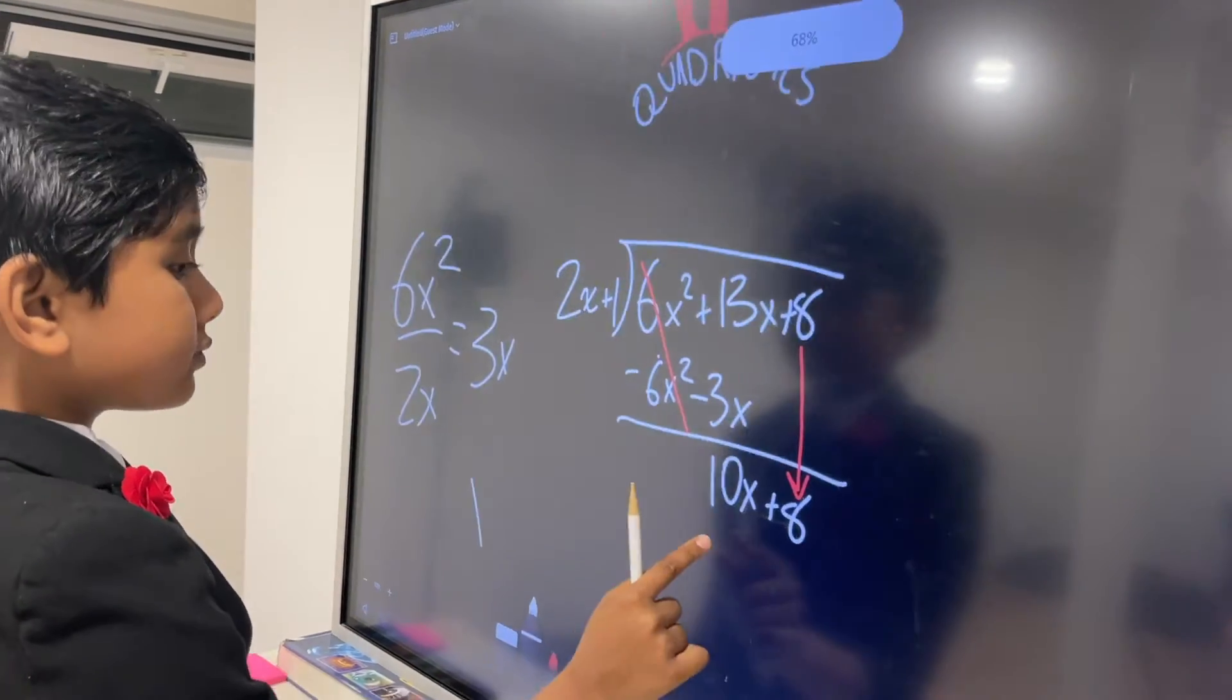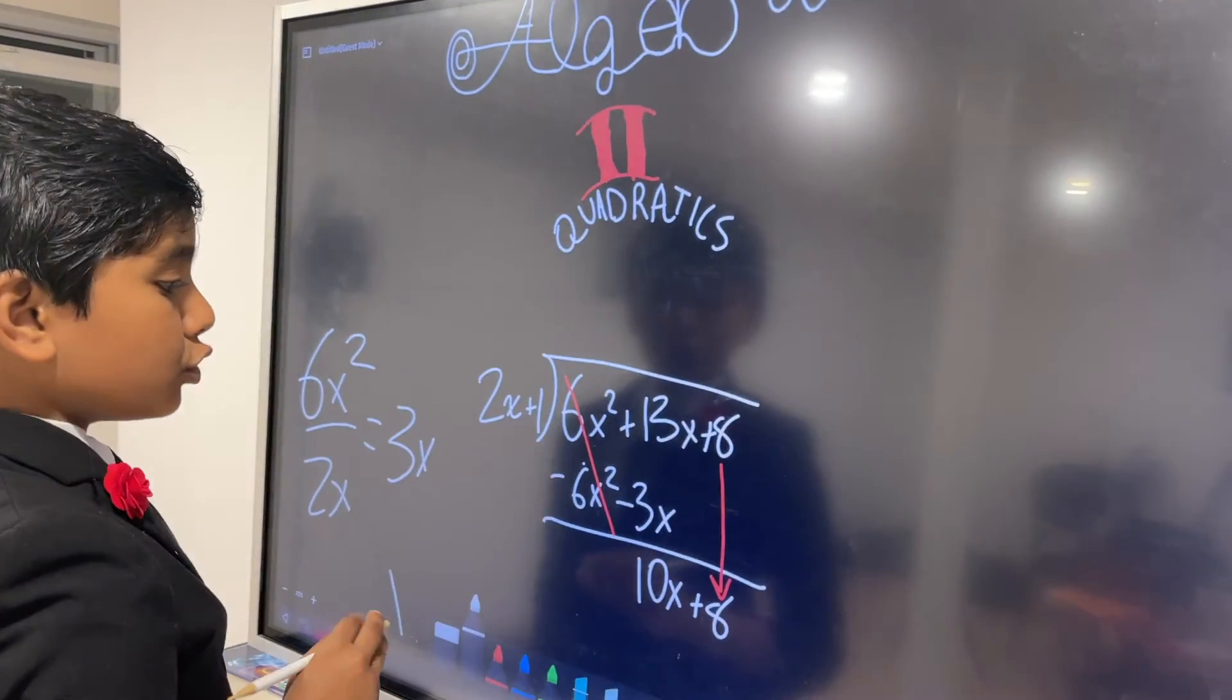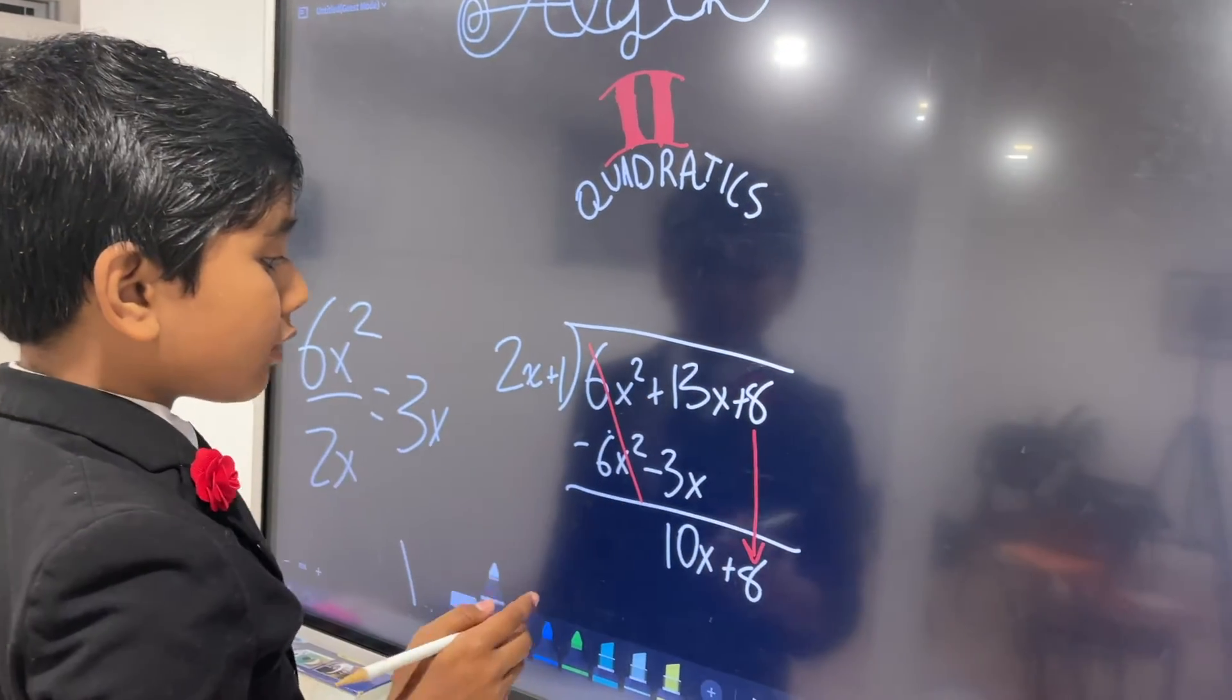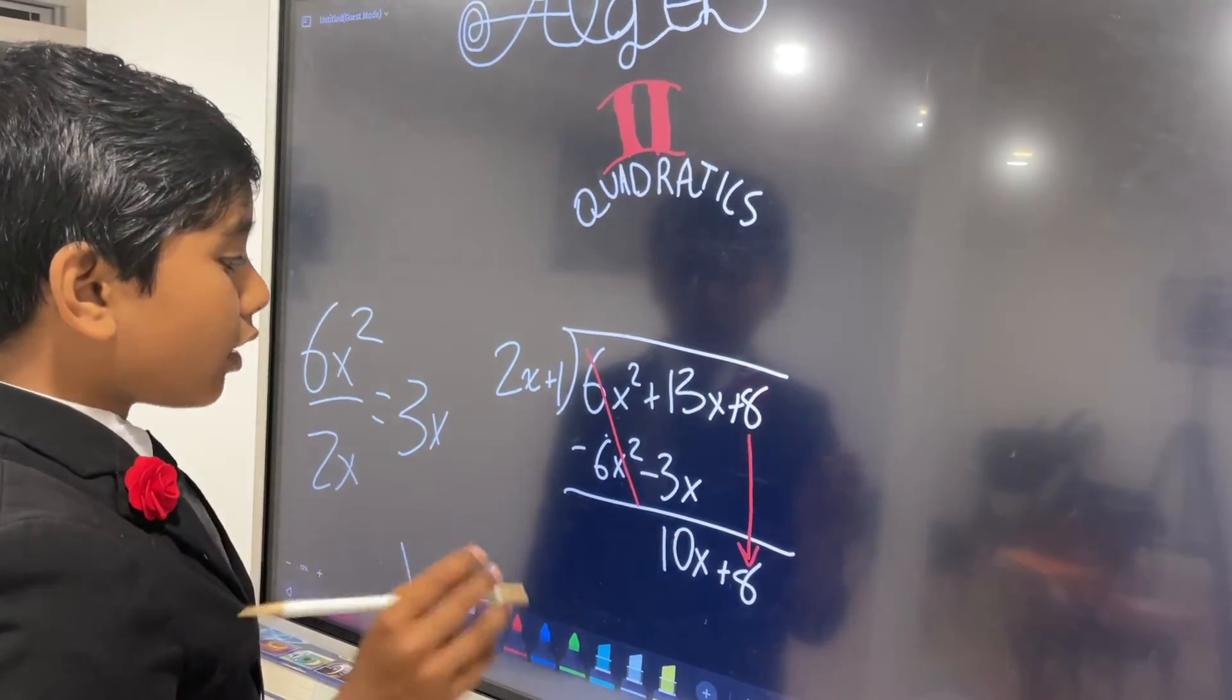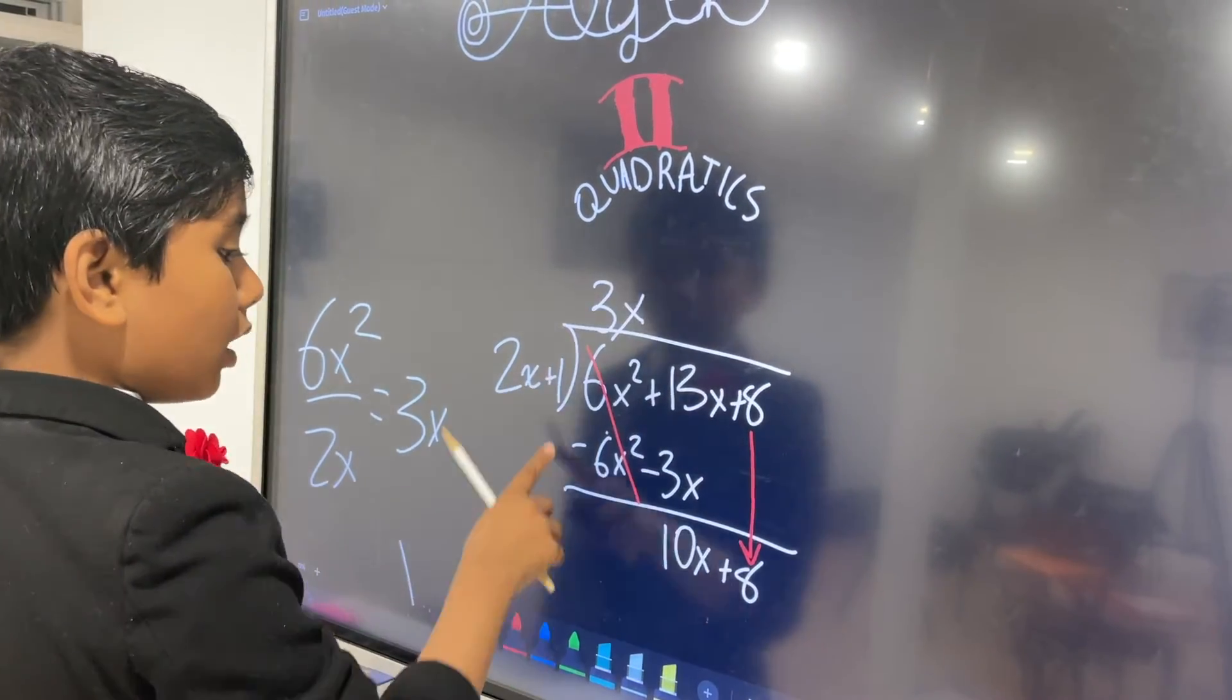So we're essentially reviewing basic concepts in Algebra 1 for this. 6x squared minus 6x squared cancels out. 13x minus 3x is 10x. Then we bring the 8 downwards, so this is plus 8. Since 6x squared minus 3x is 2x plus 1 times 3x, then I'm going to put 3x up top.